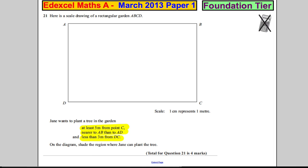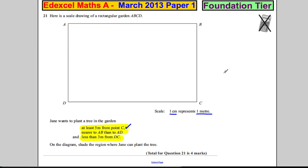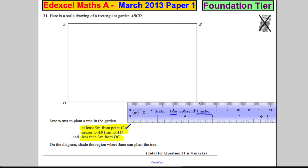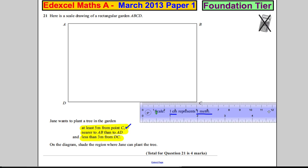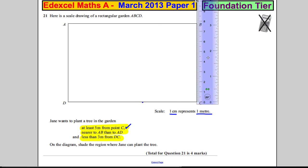Let's start with this one: at least five meters from point C. It's a scale drawing where one centimeter equals one meter, so we want to measure five centimeters from point C. So insert, get the ruler. Now five centimeters from point C—that's five centimeters and that's five centimeters here.